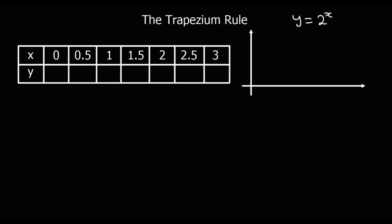Here's another question — pause the video and have a go at this one. This time we've got y = 2^x. Work out an estimate for the area underneath using the trapezium rule, and determine whether it's an overestimate or an underestimate.